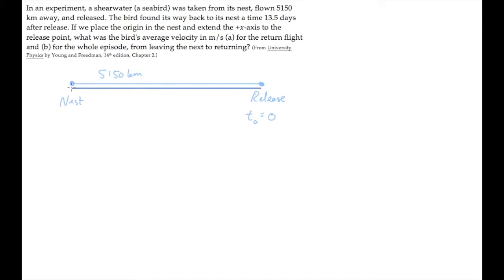So that delta x, the change in the bird's position from release to return to the nest, is minus 5150 km. We're letting to the right be the positive x direction as usual. Convert this distance into the SI unit of meters, so delta x is minus 5.15 times 10 to the 6 meters.